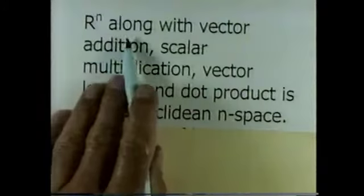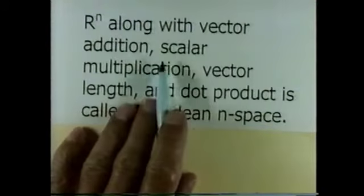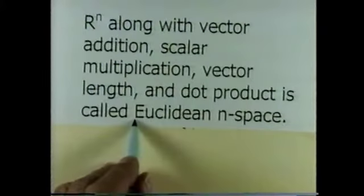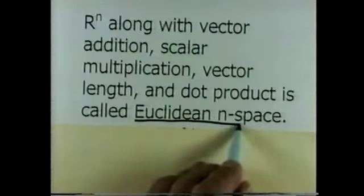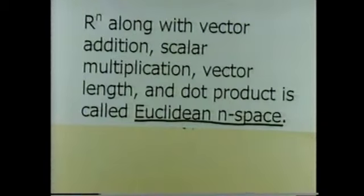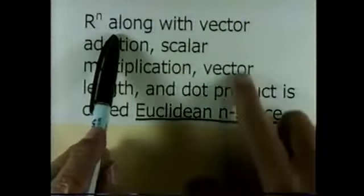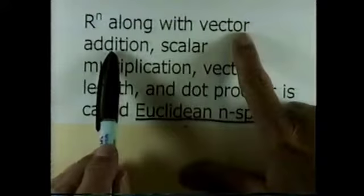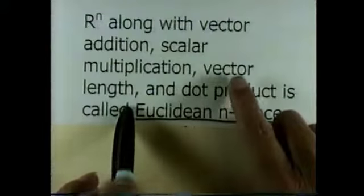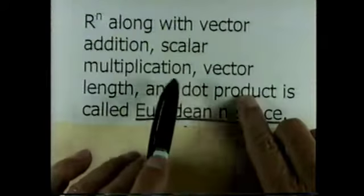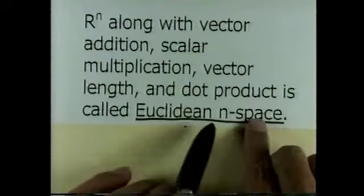N-space along with vector addition, scalar multiplication, vector length, and dot product is called Euclidean n-space. So you take n-space with the operations of vector addition, scalar multiplication, the definition of vector length, and the operation of dot product, along with the properties of these things — you have Euclidean n-space.